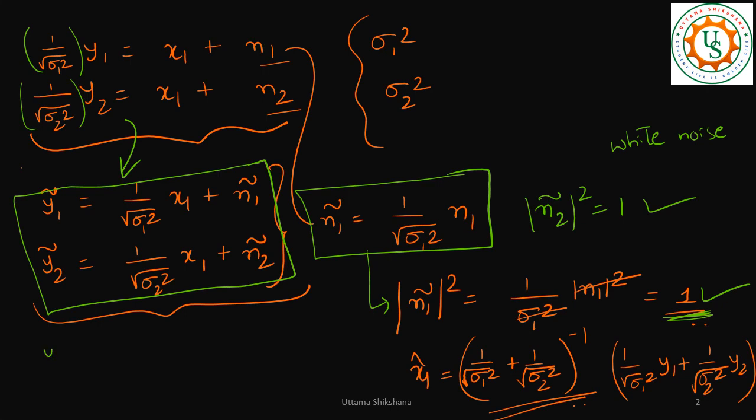So why don't you just add this? If you add, then what you get: y1 tilde plus y2 tilde is equal to 1 by square root of sigma 1 square plus 1 by square root of sigma 2 square times x1 plus n1 tilde plus n2 tilde.